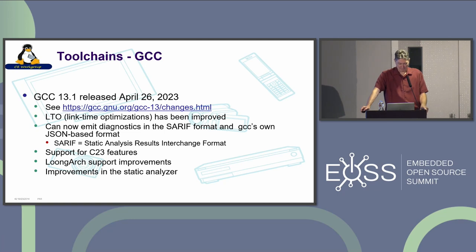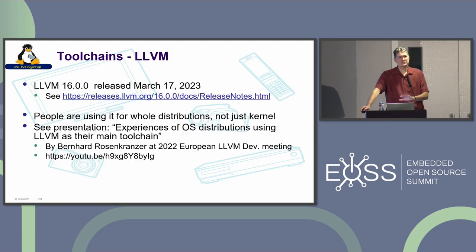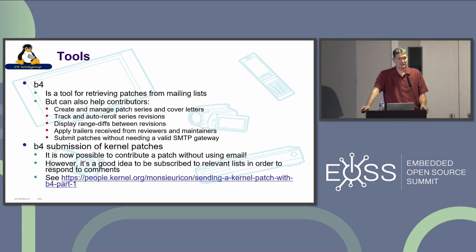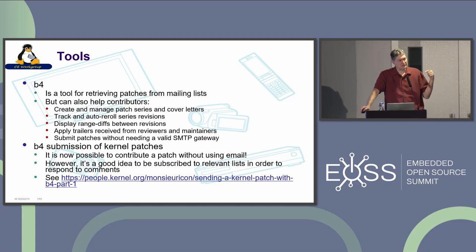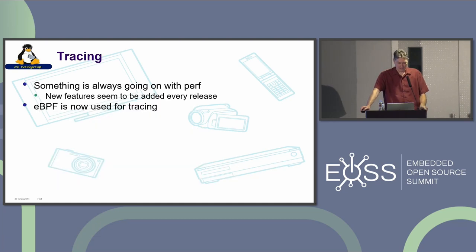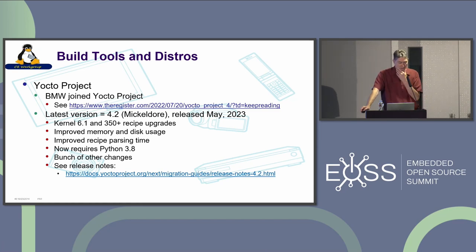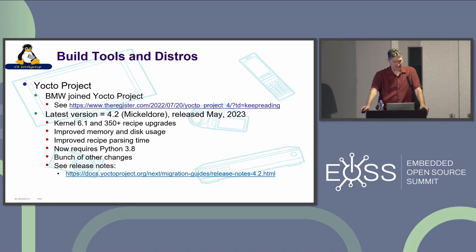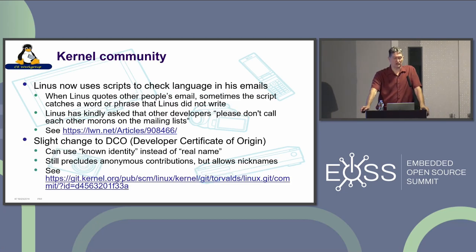LTP had a new test suite. LLVM had another release and is being used a lot more. You can submit patches to the kernel without having to be on the mailing list — it's not recommended, you should be there to answer questions, but you don't actually have to submit through the mailing list. That's been a stumbling block especially for people in companies with Exchange servers and weird VPNs — Sony mangles all the mail that goes out from my system, so tools like B4 are really interesting. Yocto Project: BMW joined the Yocto Project, which is pretty cool. They just had the Mickledore release with improved memory and disk usage and improved parsing time.